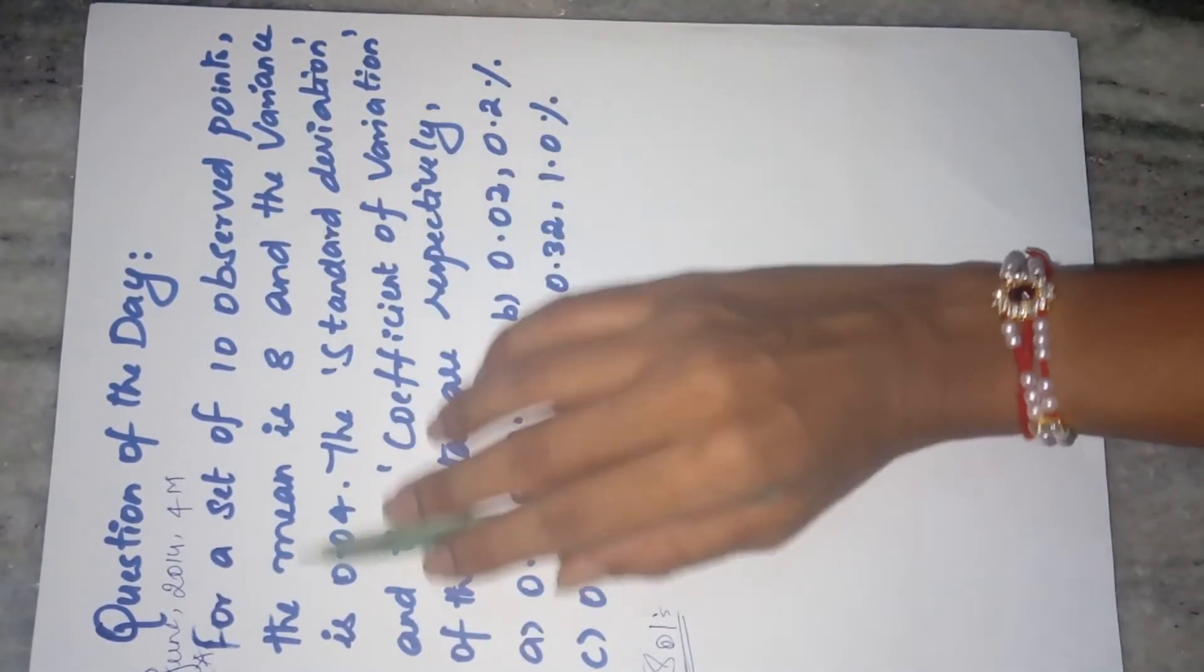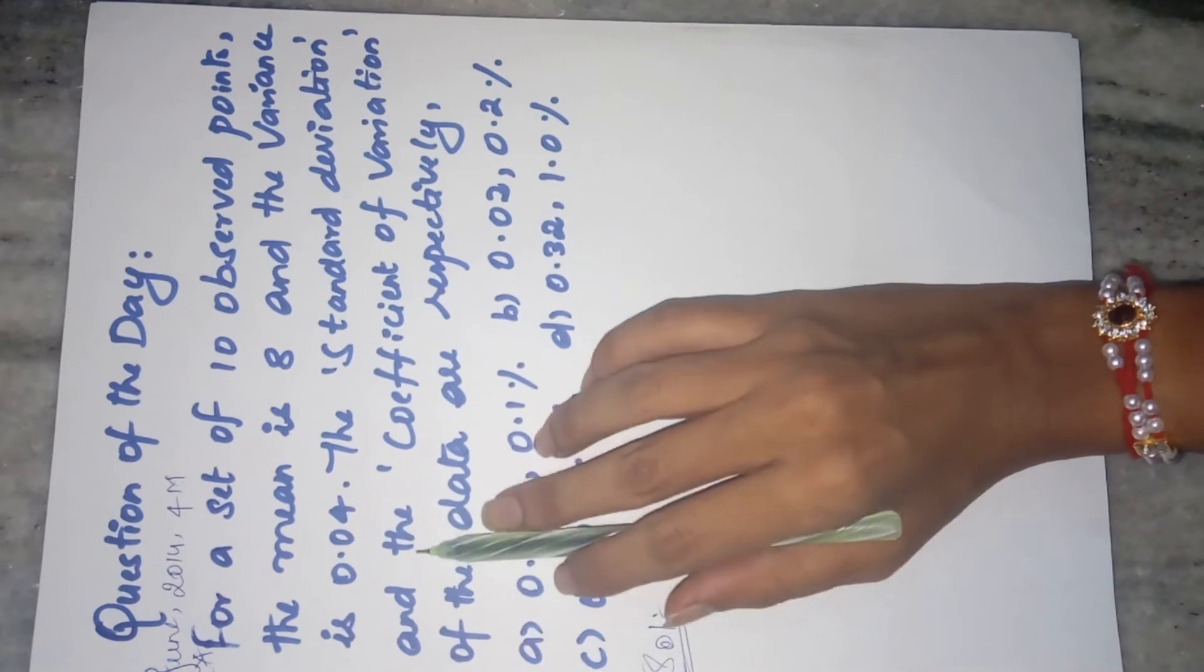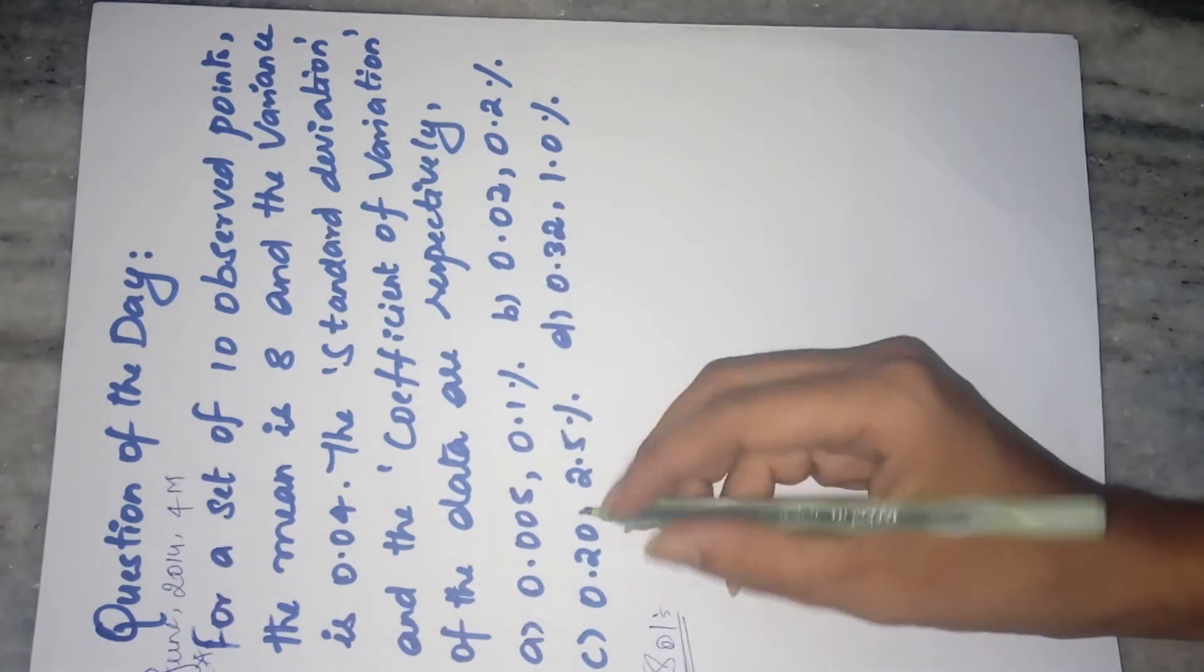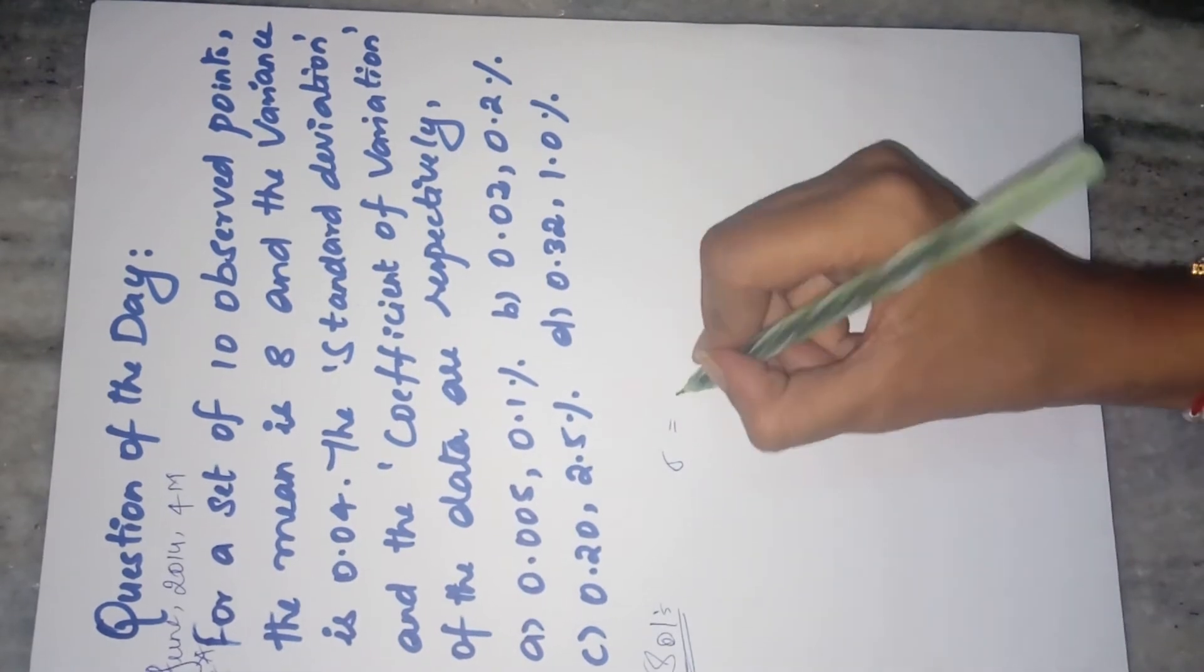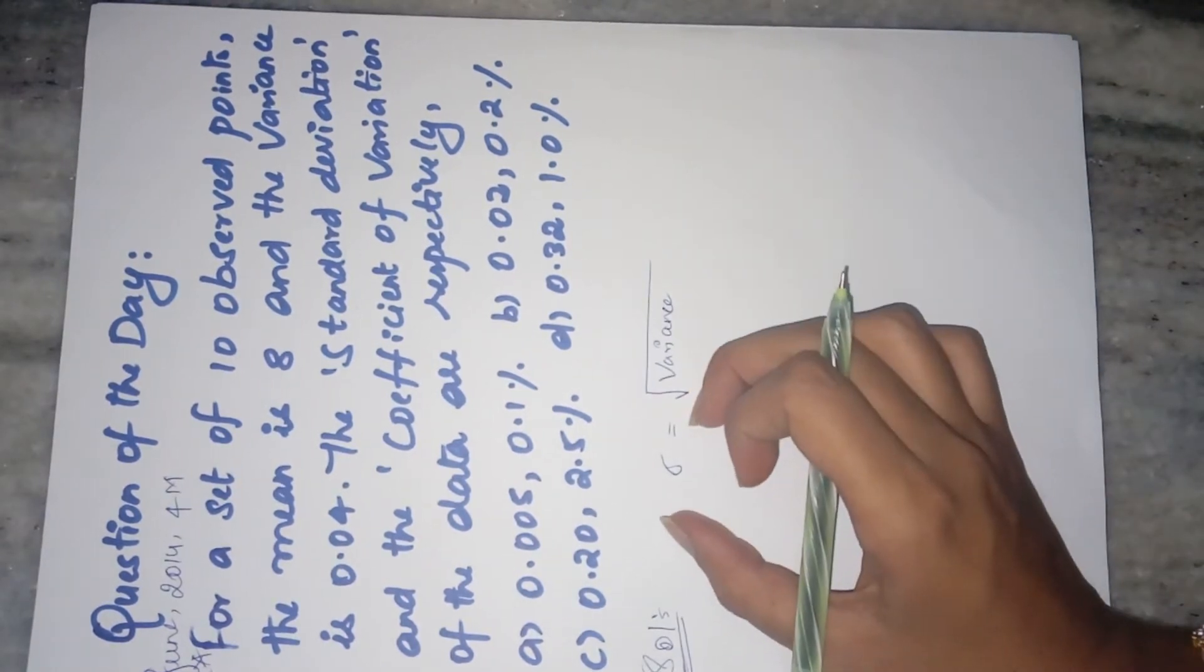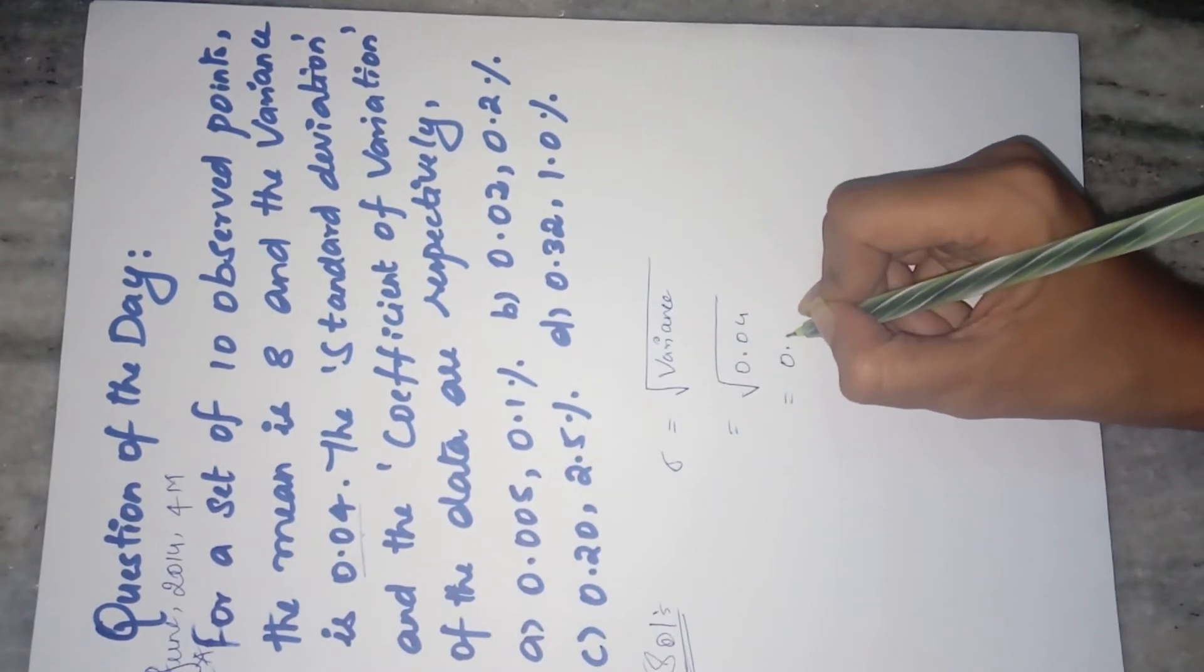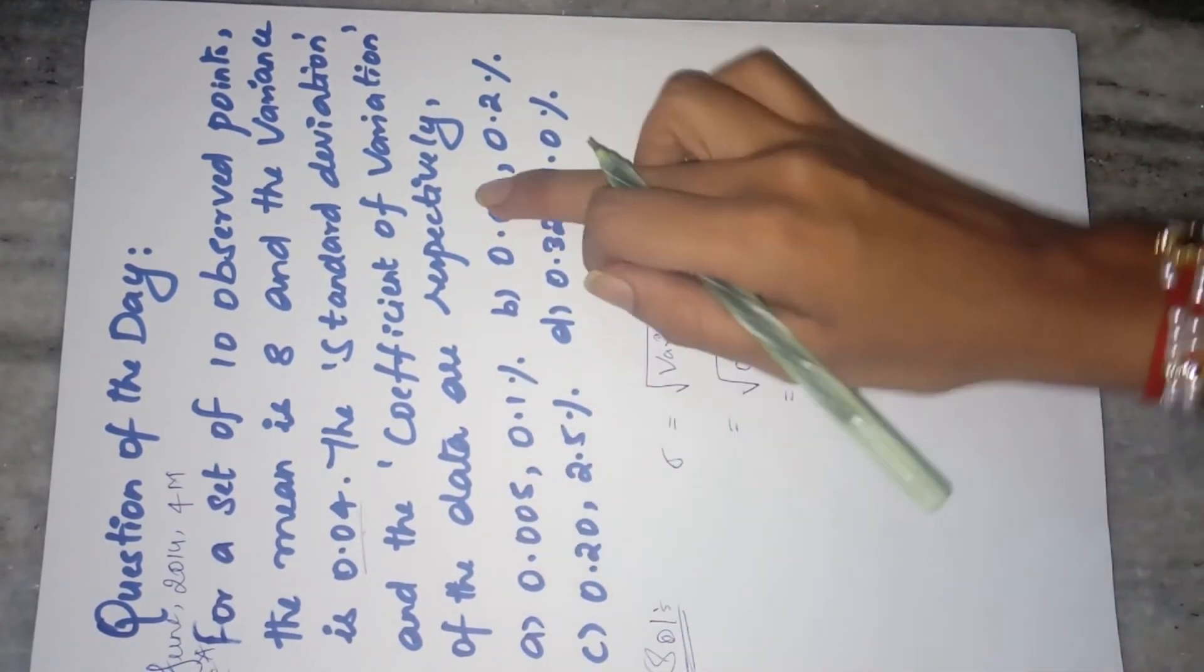I will teach you: for a set of 10 observed points, the mean is 8 and the variance is 0.04. Standard deviation and the coefficient of variation of the data are respectively. You are given with the 4 options. So what you have to find? Standard deviation. Now I will directly tell you what is the standard deviation formula. Standard deviation is denoted by sigma and it is nothing but your square root of variance. Square root of variance is nothing but your standard deviation, and you can see in the question that the variance is given as 0.04. Now the square root of 0.04 is nothing but 0.20. 0.20 is your answer.